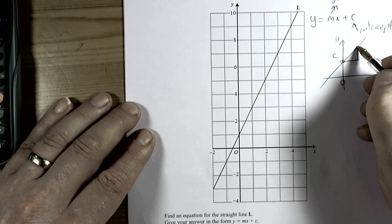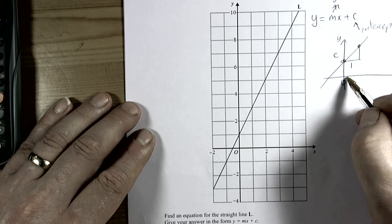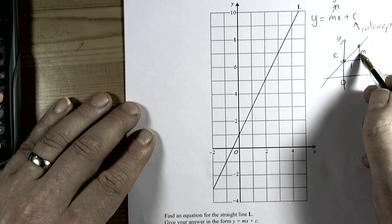The gradient is the change—for every one across you go on the horizontal axis, you'll go up the gradient m.